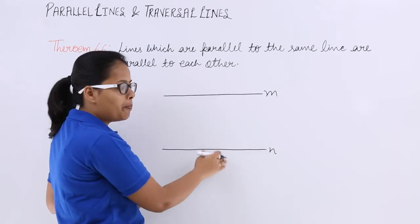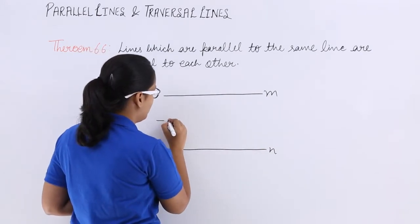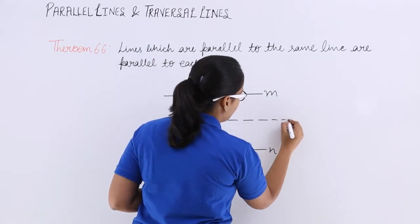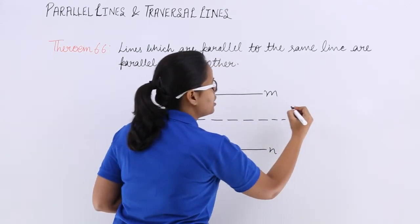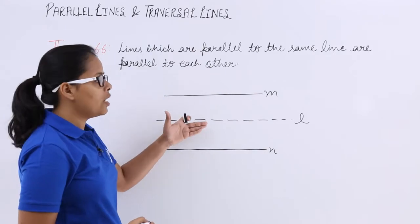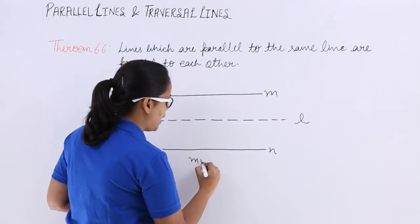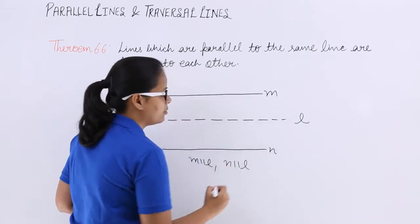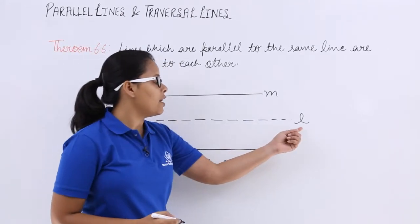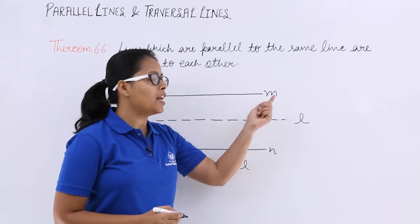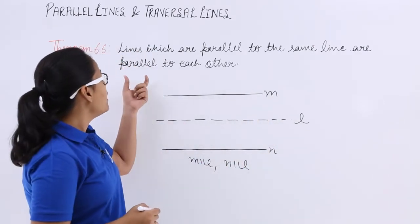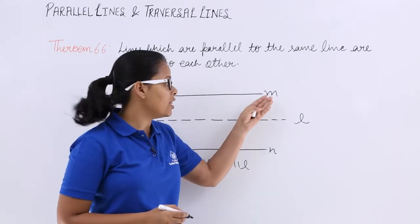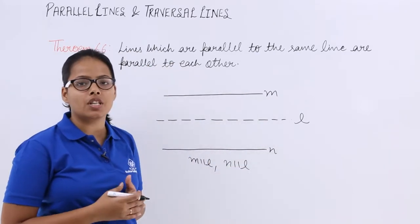These two lines are parallel to the same line. And let's suppose this is l. These two lines are parallel to each other. However, m is parallel to l and n is parallel to l. Then lines which are parallel to the same line, these two lines will be parallel to each other itself.